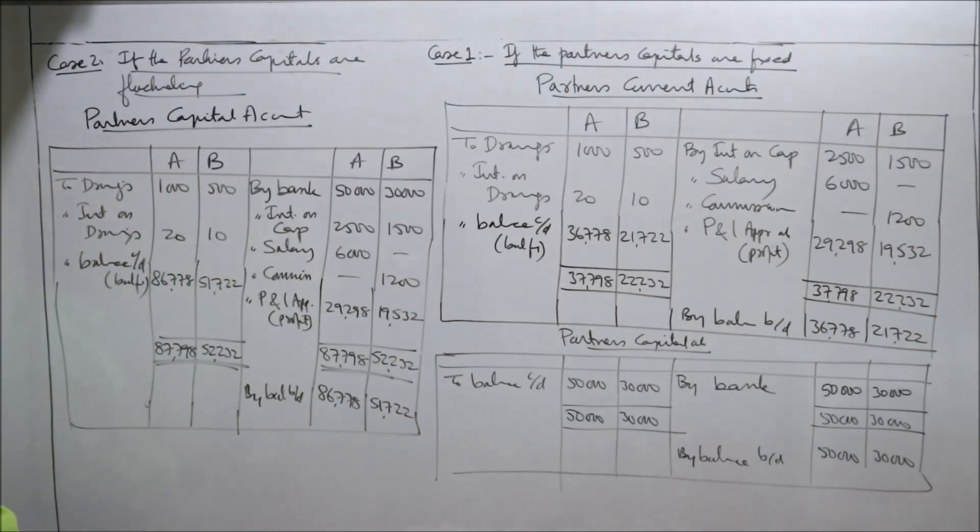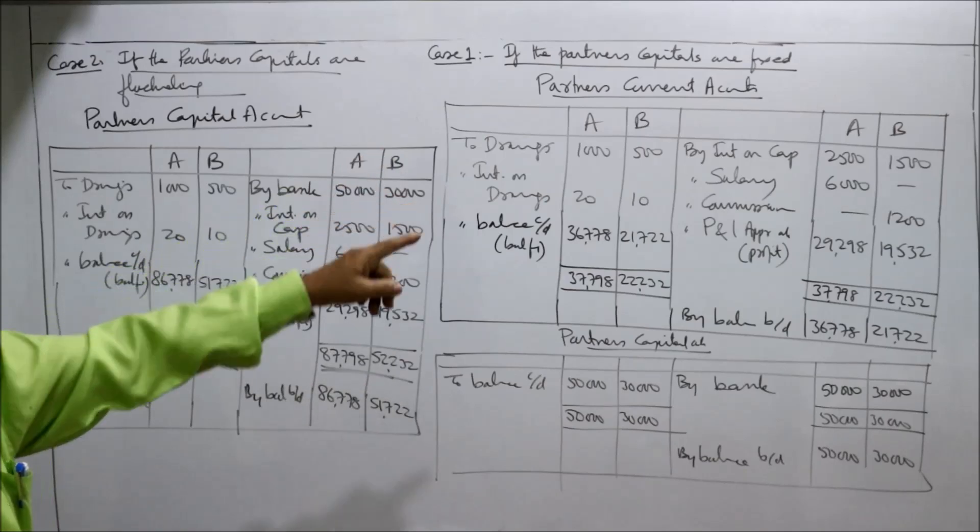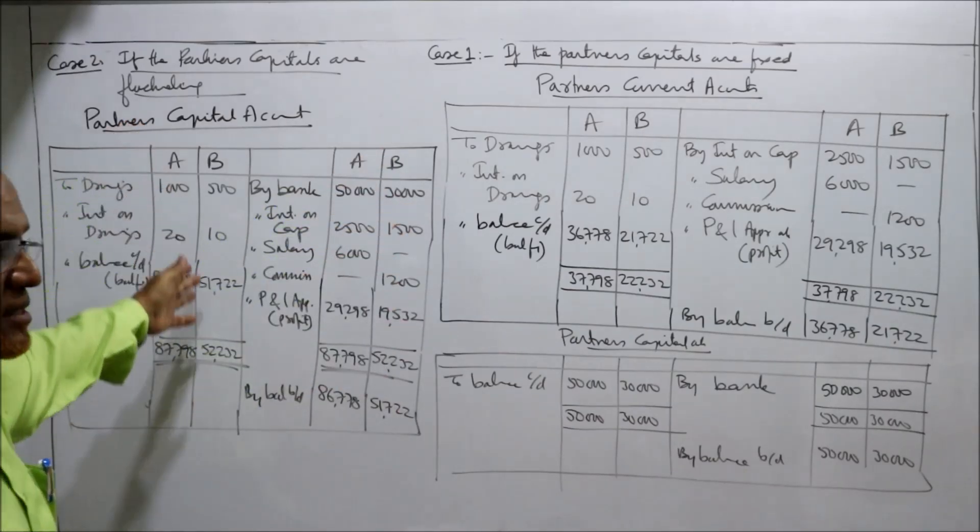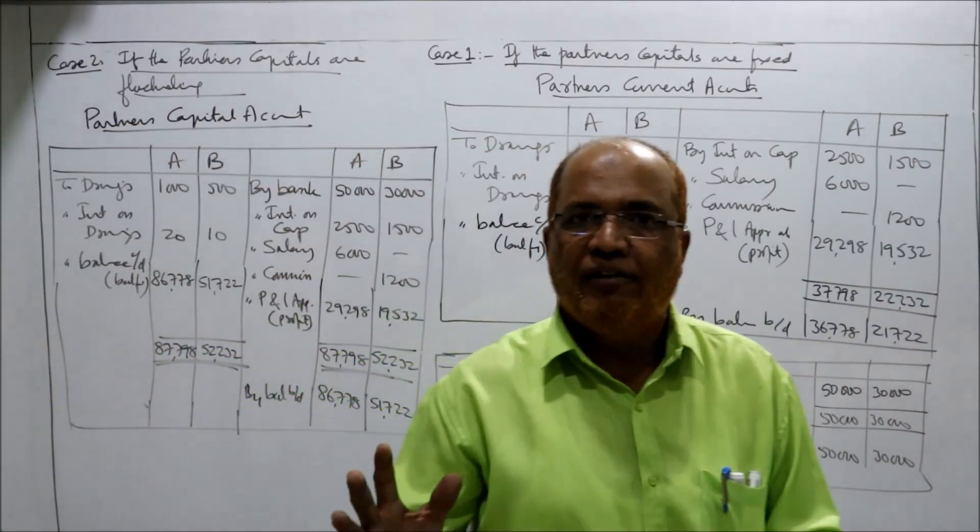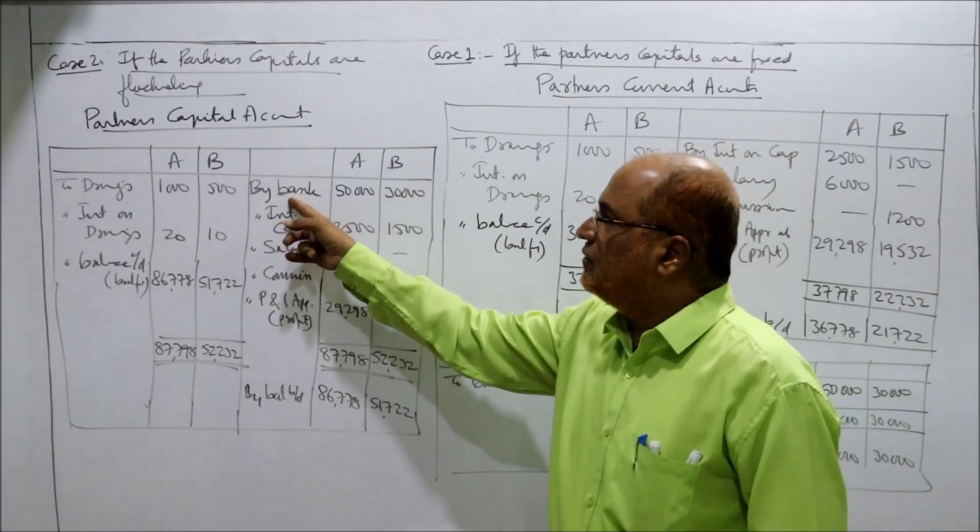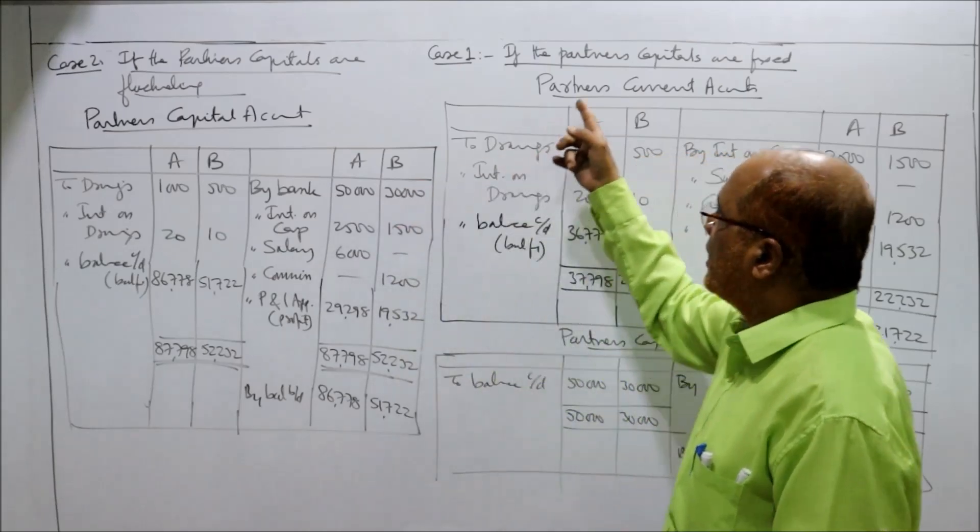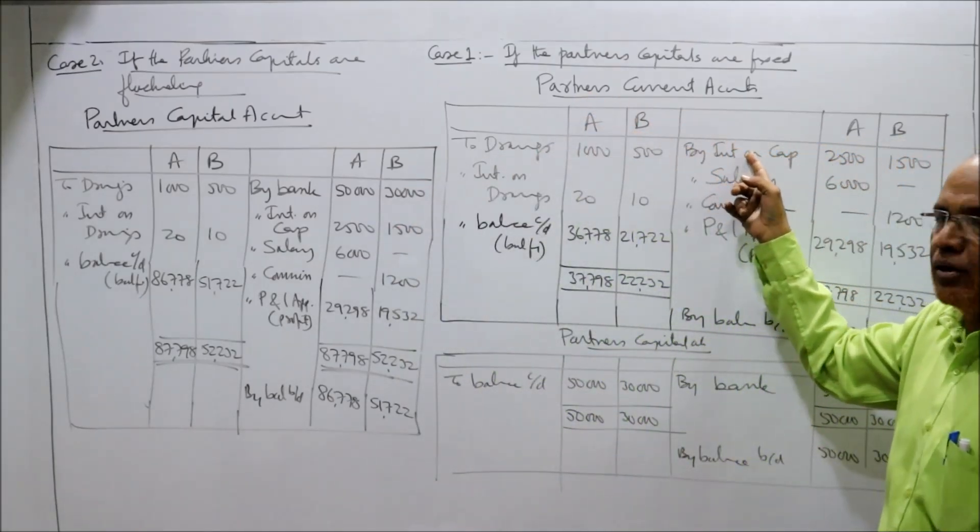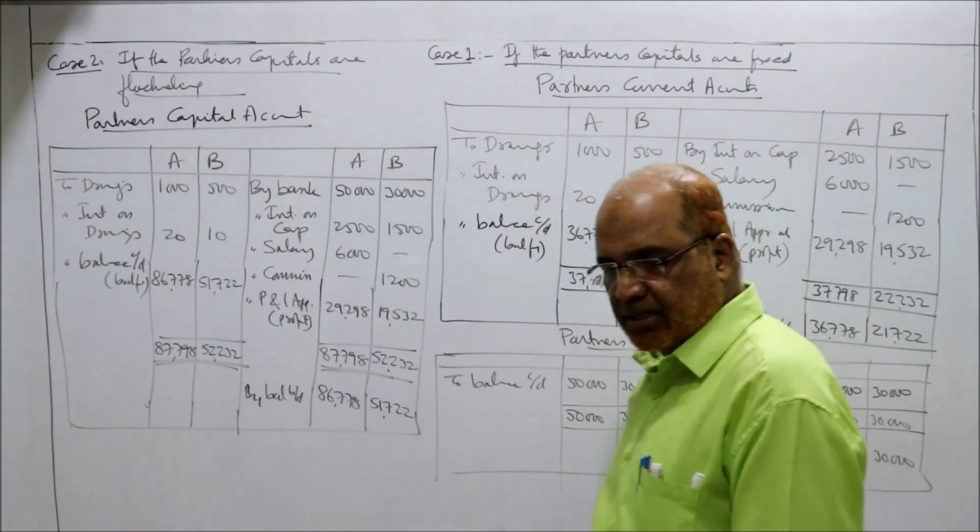That's all. That is the partner's capital accounts are fixed and here the partner's capital accounts are fluctuating. Only the difference is capital - opening capital we have taken here, but here in current account we have not taken opening capital. In fixed capital account, fixed capital is kept separately.